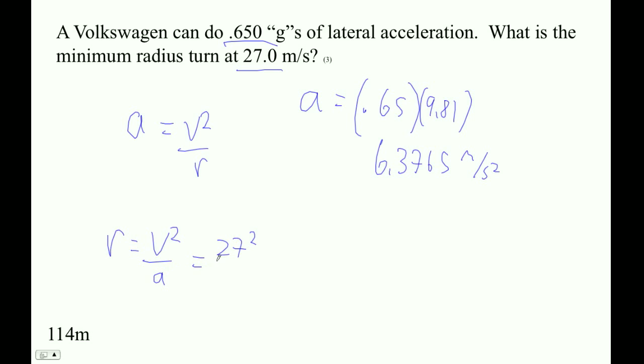So 27 squared divided by 6.3765, that's meters per second, the quantity squared is meters per second squared. Yeah, that'll end up being meters, right?